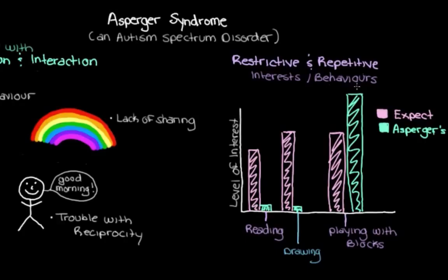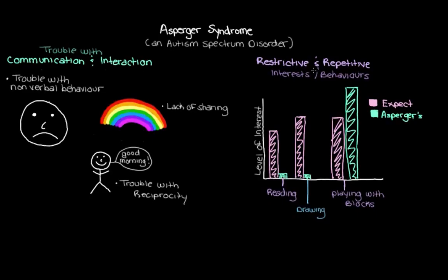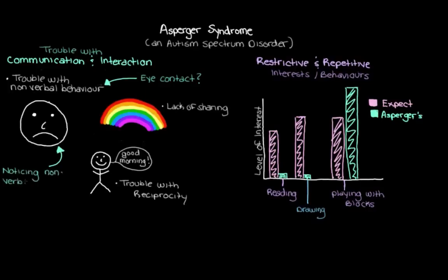When we say repetitive behaviors, we mean things like lining up toys or moving certain body parts in repetitive ways. These main signs of Asperger's are actually what we use to diagnose the syndrome. There isn't really a blood test or brain scan to confirm Asperger's, so we rely on looking for these behavioral signs. We usually do that by asking parents questions and watching the child interact with other people — seeing if they make eye contact, use nonverbal cues, pick up on body language or changes in tone of voice, or want to share toys and interests.